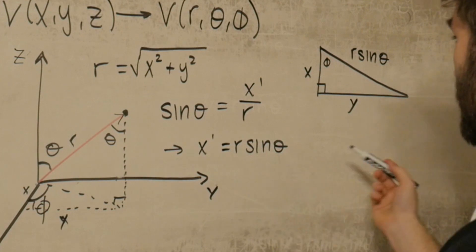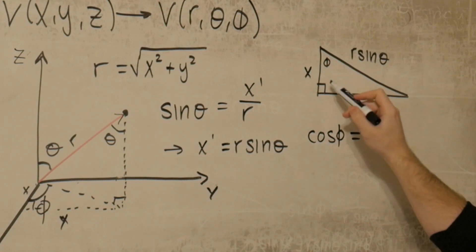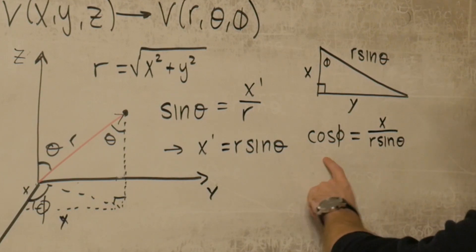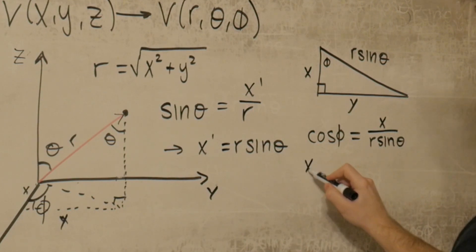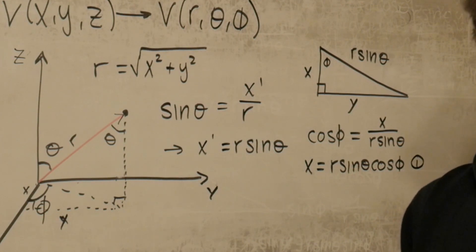All right, so what happens if we take the cosine of this angle? If we take the cosine of phi, what we get is that this is equal to x over r sine theta. Multiplying both sides by r sine theta gives us that x is equal to r sine theta cosine phi. And that's the first conversion from Cartesian to spherical coordinates.